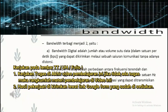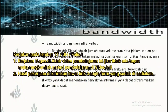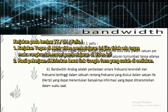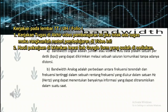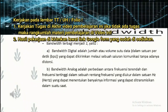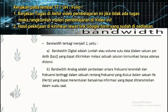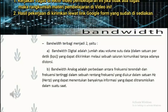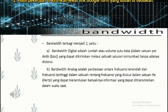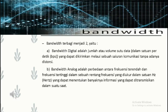Bandwidth dibagi menjadi dua, yaitu yang pertama adalah bandwidth digital, dan yang kedua adalah bandwidth analog. Bandwidth digital adalah jumlah atau volume suatu data dalam satuan per detik atau BPS. Sedangkan bandwidth analog adalah perbedaan antara frekuensi terendah dan frekuensi tertinggi dalam sebuah rentang frekuensi yang diukur dalam satuan Hz, yaitu Hertz.